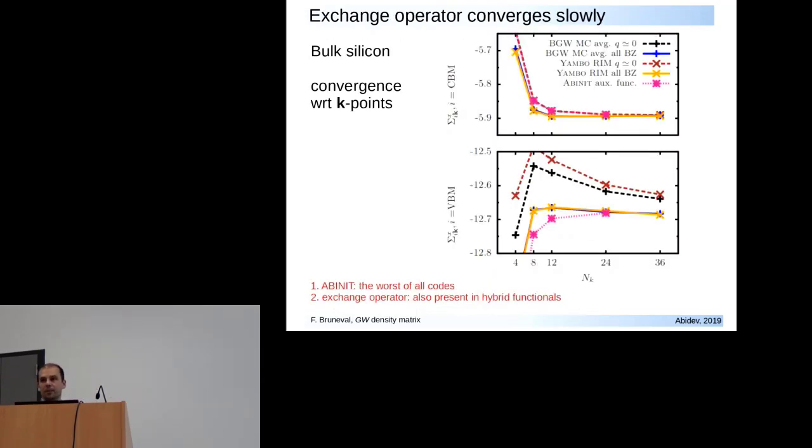If you look at a very simple example, this is bulk silicon with only two atoms per cell. This is the behavior of the exchange operator evaluated for the conduction band minimum at gamma and the maximum of the valence band. You see as a function of the grid, 4x4x4, 8x8x8 and so on, these two expectation values converge very slowly and they do not converge in the same way according to the different codes.